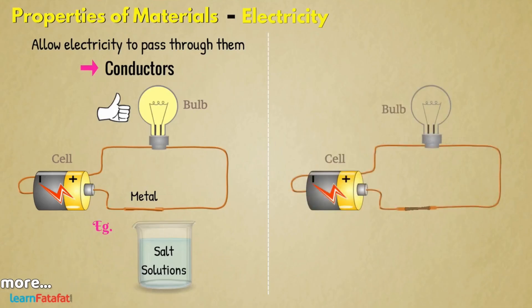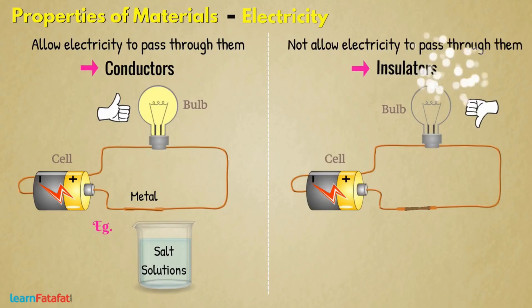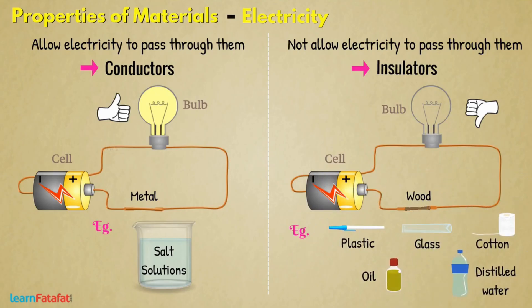Other materials which do not allow electricity to pass through them are insulators. For example, wood, plastic, glass, cotton, oil, distilled water, etc.